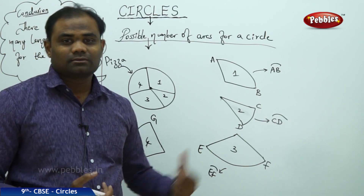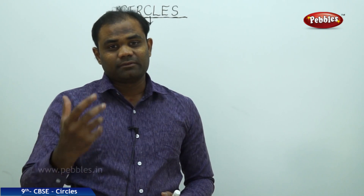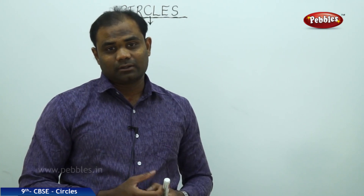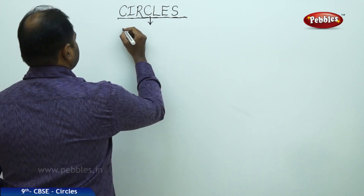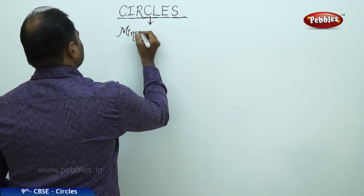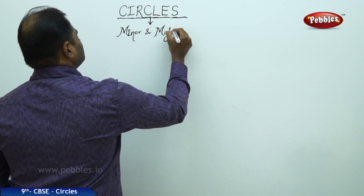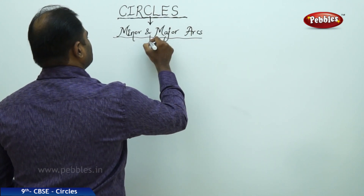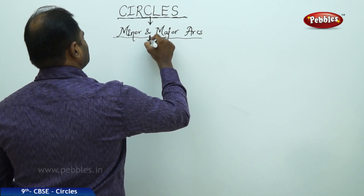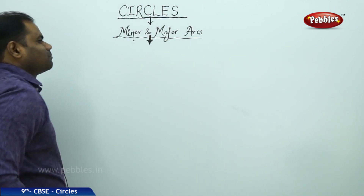Now connecting the previous concept with major arc and minor arc. Since the arc length differs as the size of the pizza differs, we classify arcs into major and minor arcs. This session is about major and minor arcs for a circle.